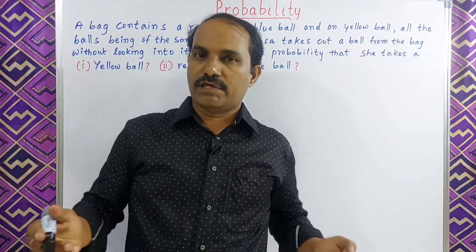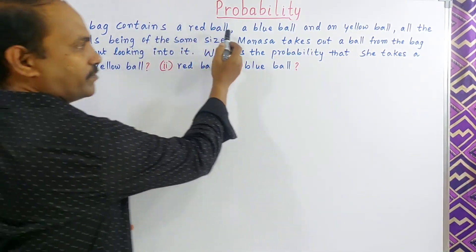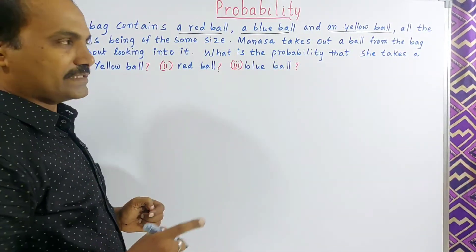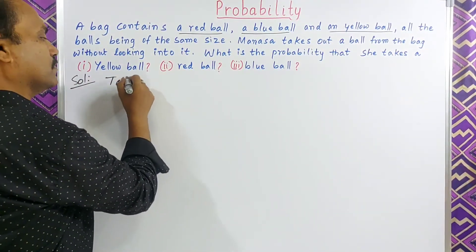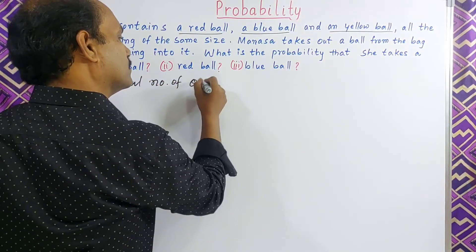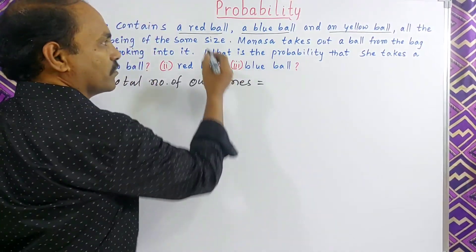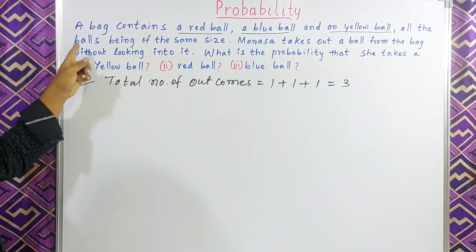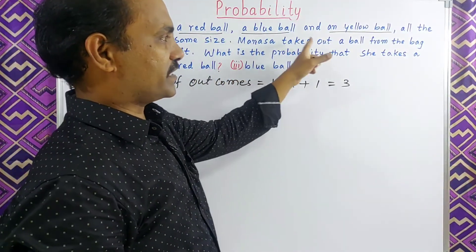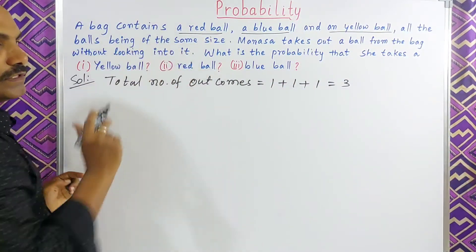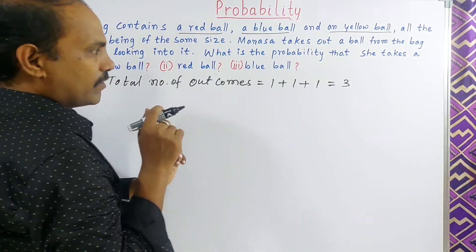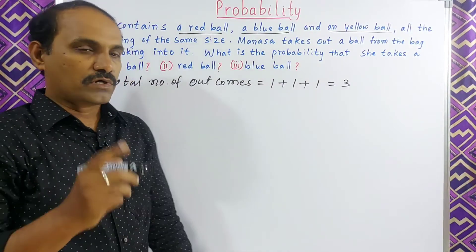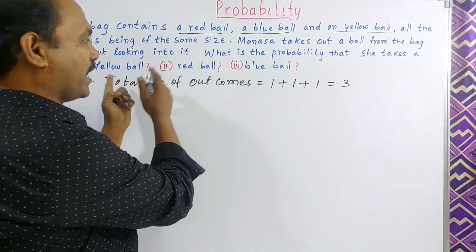Let us check one more question. This one is the example question. A bag contains a red ball, a blue ball, and a yellow ball — each color has one ball in the bag. All the balls are the same size. Manasa takes out a ball from the bag without looking into it. What is the probability that she takes a yellow ball, a red ball, or a blue ball? In this case, all are equally likely — all are having the same chance of occurring.